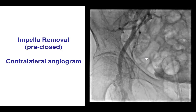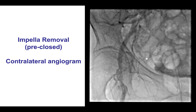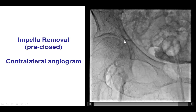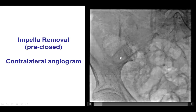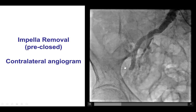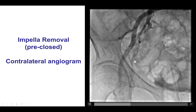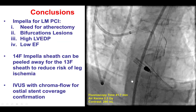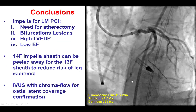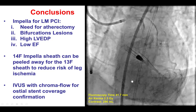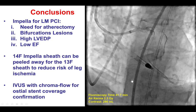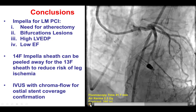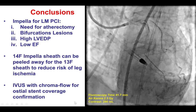The patient remained stable throughout the procedure. We then removed the Impella. We had placed two Perclose sutures prior to inserting the Impella sheath, and those were then tightened. We had a contralateral injection showing good hemostasis. This was the final result — we had good flow from the left main into the LAD, ramus, and circumflex, and the patient did well.